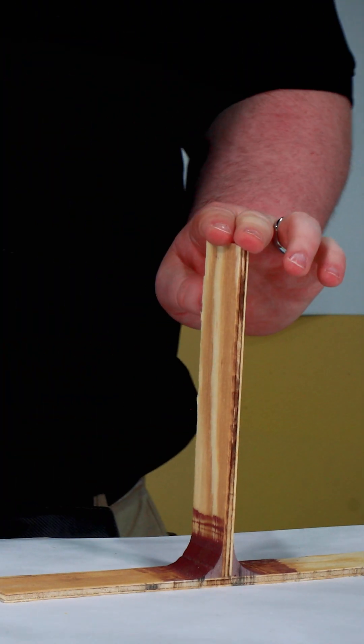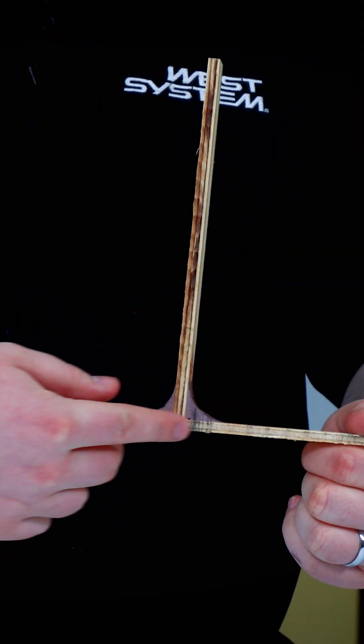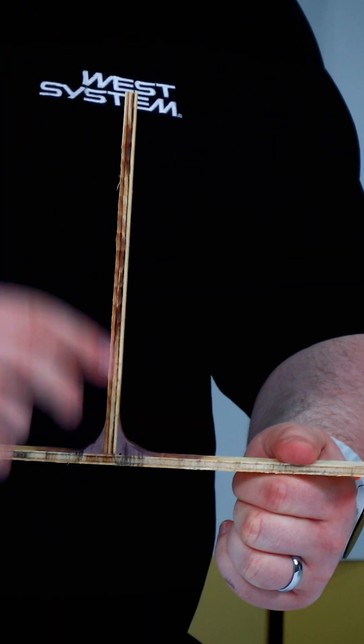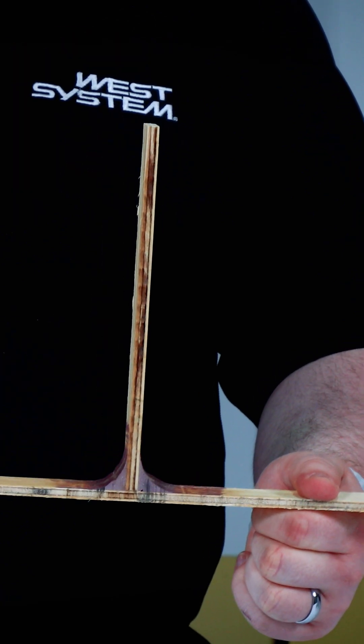In an undersized fillet, we would expect to see an adhesive failure from the bottom substrate as the fillet is pulled away from the wood.